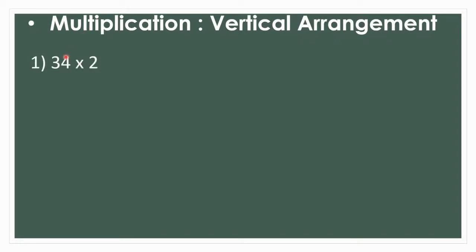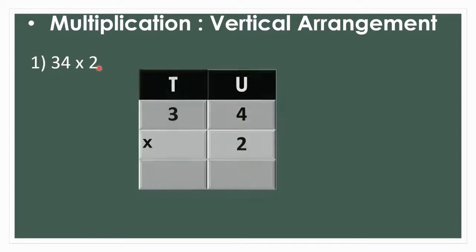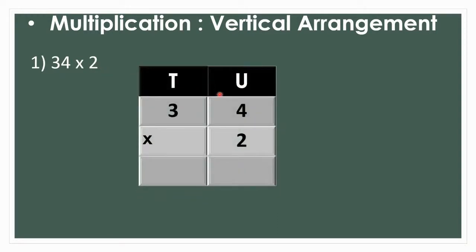Multiplication - Vertical Arrangement. First one is 34 multiplied by 2. We are going to arrange it in the vertical form. First, multiply the 4 in the units place by 2. 2 fours are 8. Write the 8 under the line in the units place. Now multiply 3 in the tens place by 2. 2 threes are 6. So the product is 68.